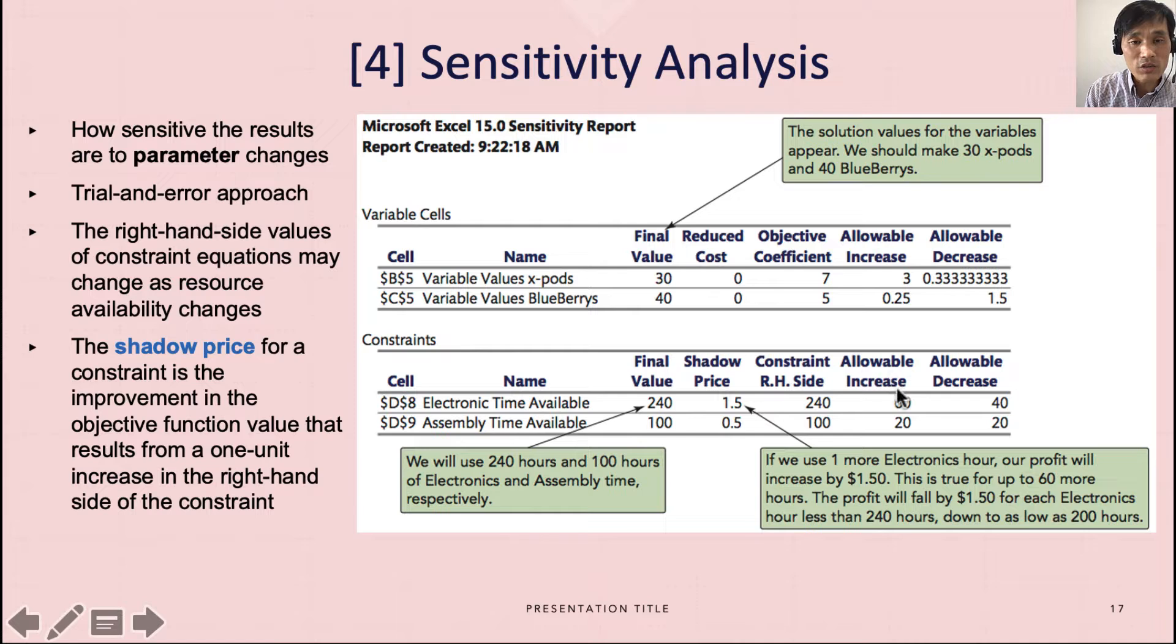And also it says allowable increase - you cannot just infinitely increase your electric time available, but up to 60 hours. In other words, up to 300 electric time available, then shadow price or the profit will increase by $1.50. Similarly, you can decrease by 40 electric time available from 240 to 200. At that time, the shadow price says $1.50 of profit will decrease as you are decreasing electric time available.